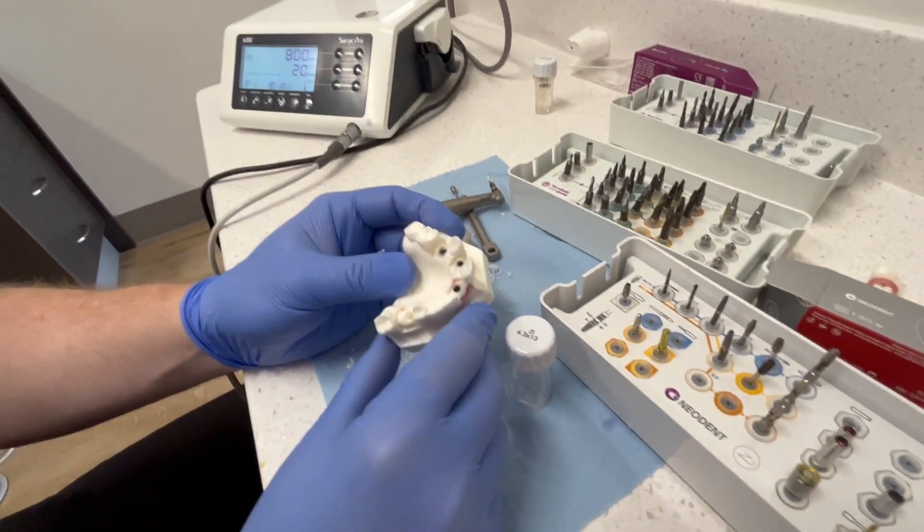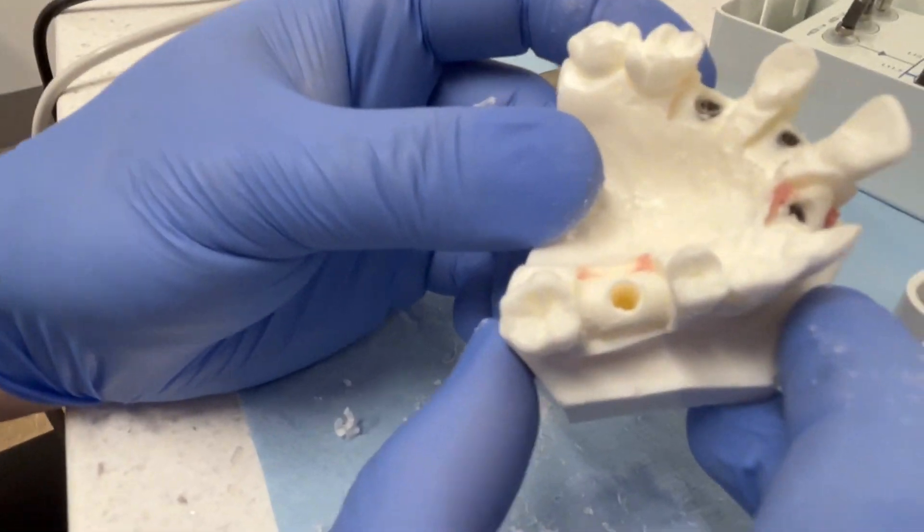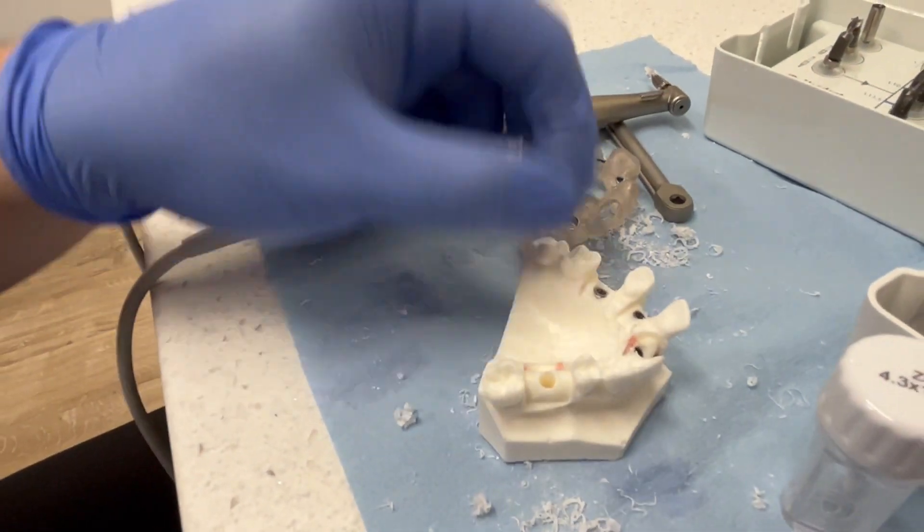So we can look right in the middle of the ridge, right where we wanted to place it. But now since we're placing a ZI, now we're going to switch to the ZI kit.